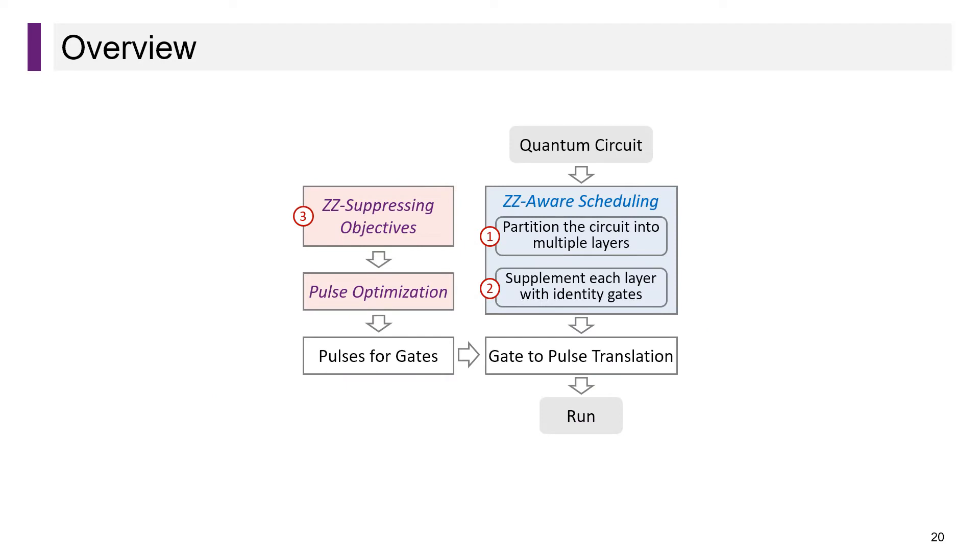To summarize, the workflow of our approach is that given a circuit, we first partition it into multiple layers. Then we supplement each layer with identity gates. Finally, we translate each gate to its corresponding pulses that are optimized to suppress ZZ crosstalk.